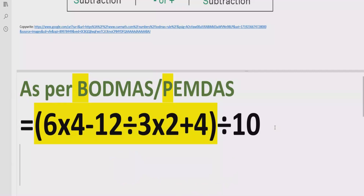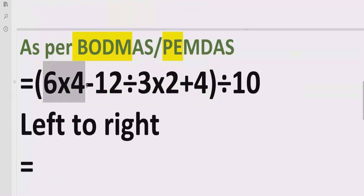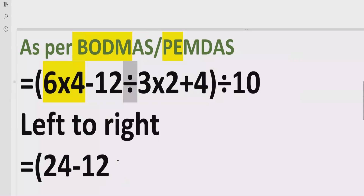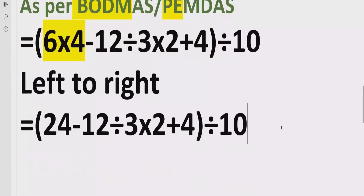We will now follow the rule after the bracket, which is the exponent part. But in our expression we do not have any exponent inside the bracket, so we will skip this step. Now we have to solve division and multiplication, going left to right. First we solve 6 multiplied by 4, which equals 24. We then have minus 12 divided by 3, multiplied by 2, plus 4 — we write those as they are — and outside divided by 10, written as it is. Reference: 6 × 4 = 24.